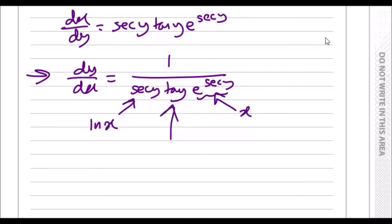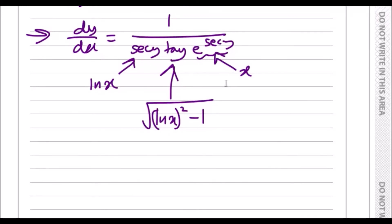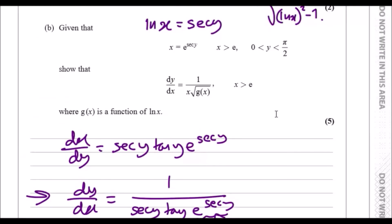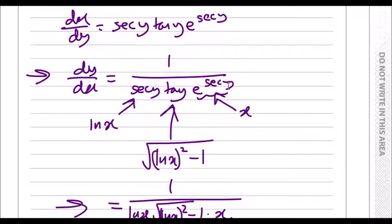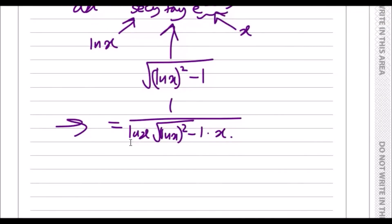Let's stick this together. This means dy/dx is going to equal 1 over ln x times the square root of (ln x)² minus 1 times x. Going back to the original function, notice how only x should be outside the square root, so we should rewrite this ln x.